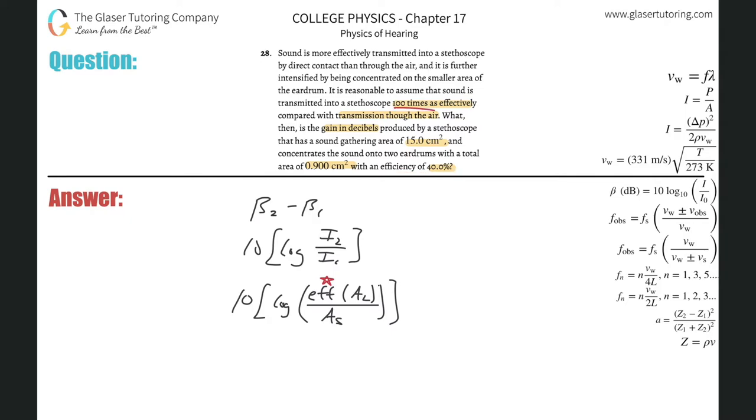We have to take both into account. Not only is it 100 times more effective in general, but the efficiency value of the transmission is 40%. So essentially what I have to do here in terms of the efficiency is just break that up into two parts. So it's going to be 10 multiplied by the log of effective times efficiency, then times the larger area over the smaller area. Now we have everything we need.